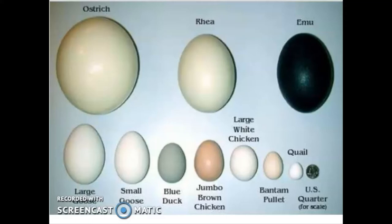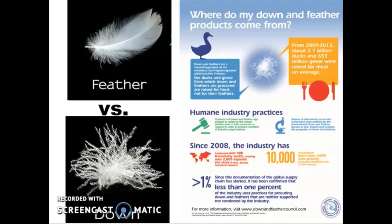Another aspect of this side of the poultry industry that we haven't talked about yet is the down and feather industry. Feathers are going to be that outer covering of the bird — they give lift to allow flight and help trap air close to their body to regulate temperature. They are the quilled, longer coverings on the bird.